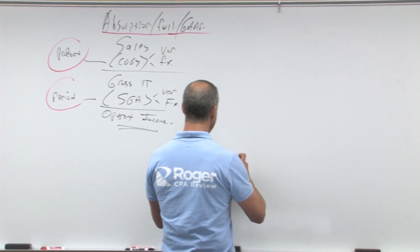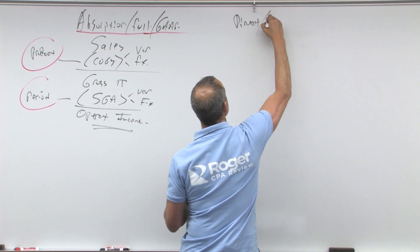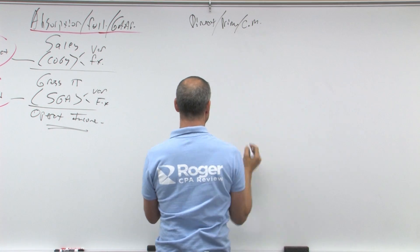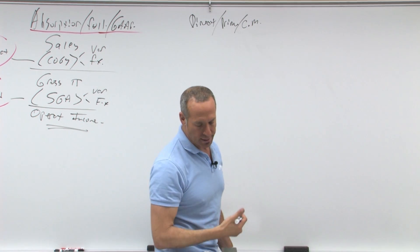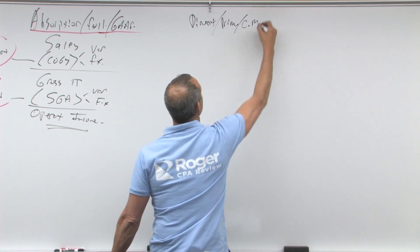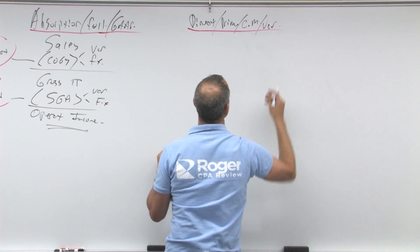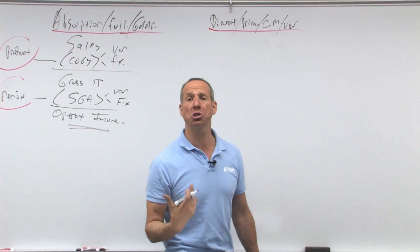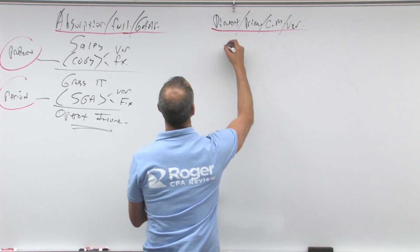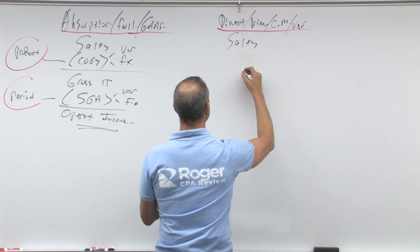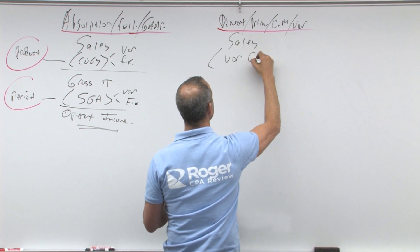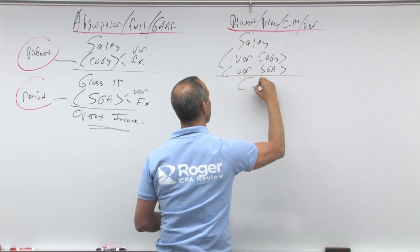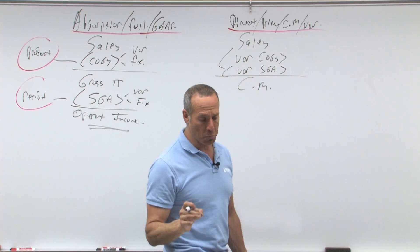Let's talk about absorption versus direct. And this is called direct prime. This is also called your contribution margin income statement. So you'll see here the words direct, variable, prime, contribution. What we're really looking at are variable versus fixed. Now this is really for management size only. This is for internal reporting purposes. Here we're going to start out with the same number, sales, but we're going to take out our variable costs of goods sold and our variable SG&A. That'll give us something called CM, and that's called the contribution margin.